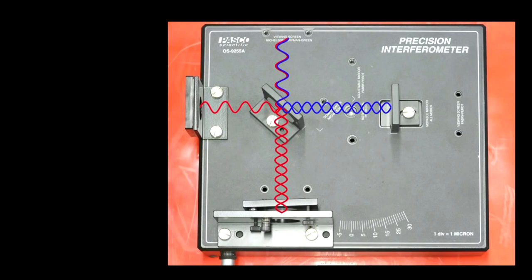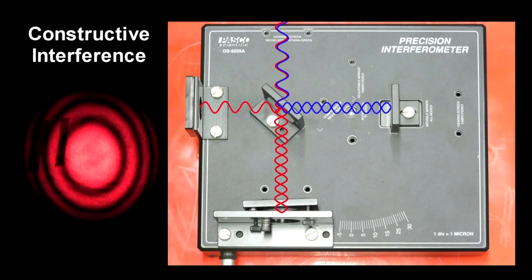If the distances traveled are exactly equal, they will be in sync when they recombine. This produces the maximum constructive interference. The main fringe has been marked with tape to help keep track of any shifting.